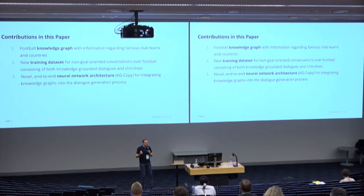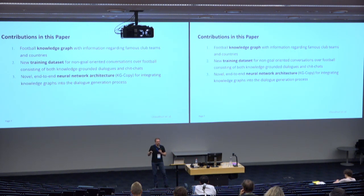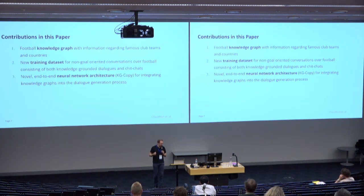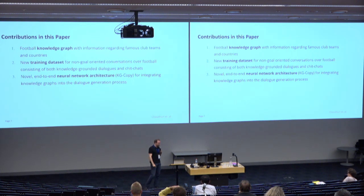To test this research hypothesis, we make three contributions: first, we generate a knowledge graph for football, as most people can easily talk about it; second, we create a new training dataset of dialogues containing 3,000 conversations about football, including both chit-chat and factual queries; and third, the main contribution is a new neural network architecture called KG Copy, which allows integrating knowledge graphs into a generative system.